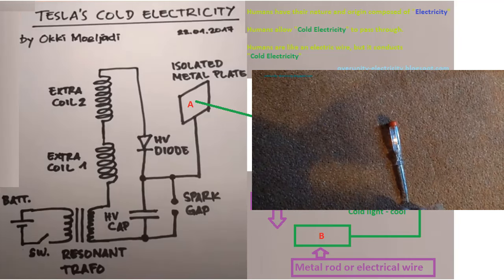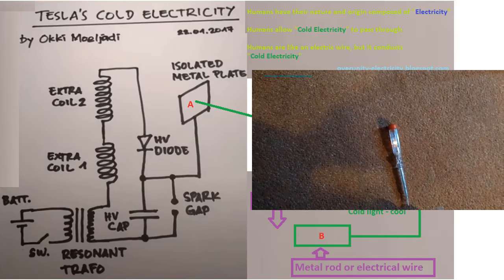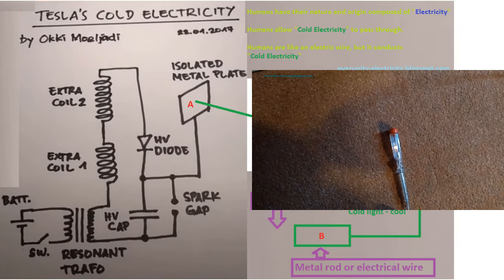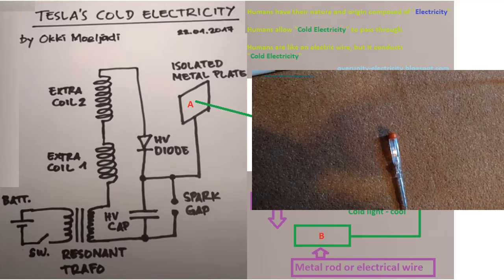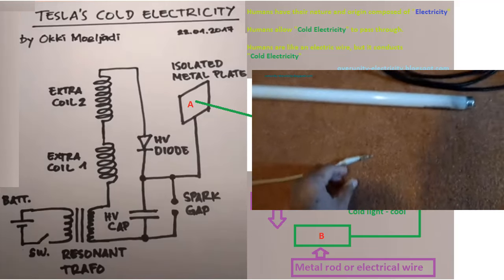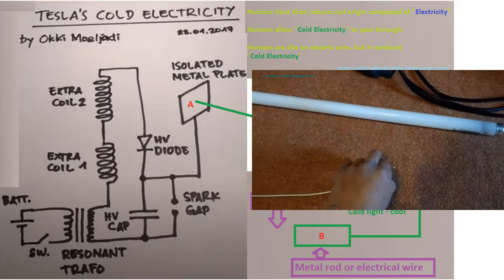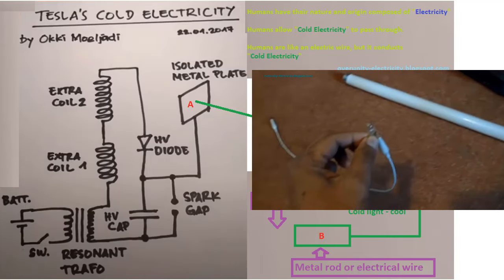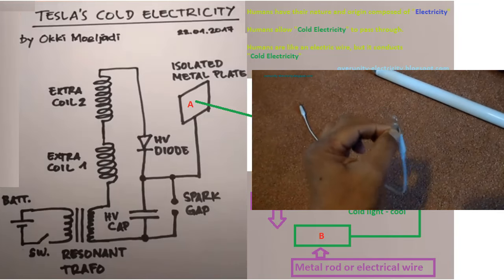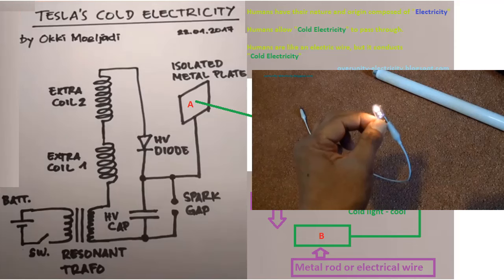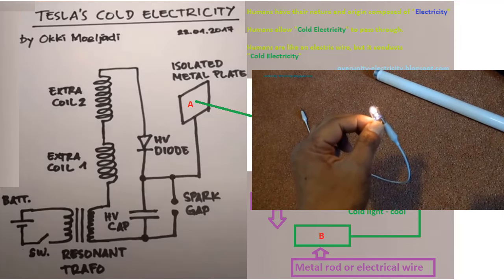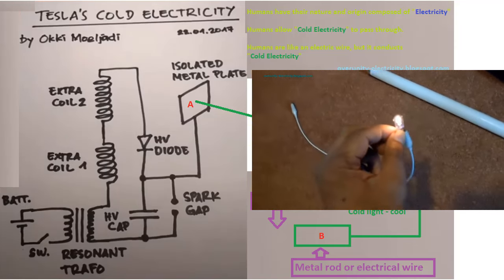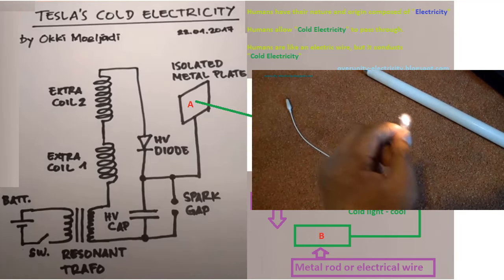People often see fluorescent lamps glowing when placed near the secondary coil of the Tesla coil. Scholars believe that it is due to radiant energy that makes the fluorescent lamp glow, although there is no closed circuit connection. However, if the output of the secondary coil is directly extracted and connected through the human body, the human body is like an electric conductor—that is cold electricity running through the human body.